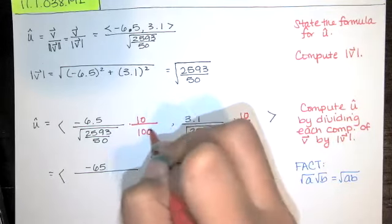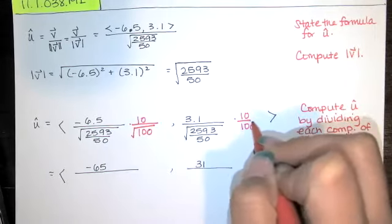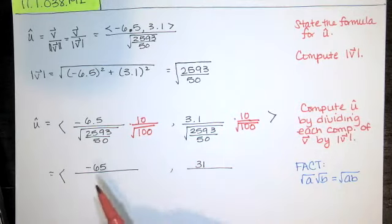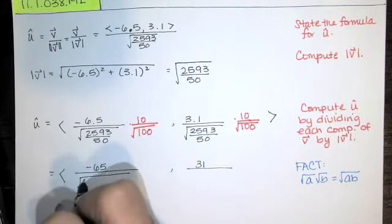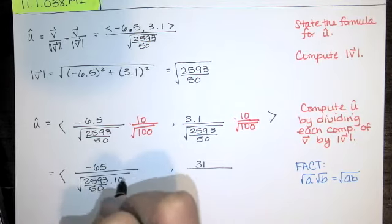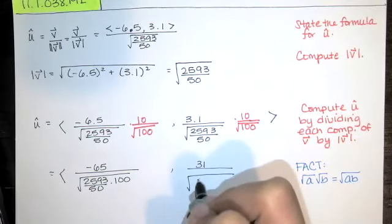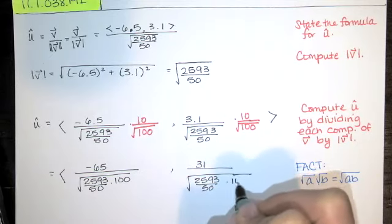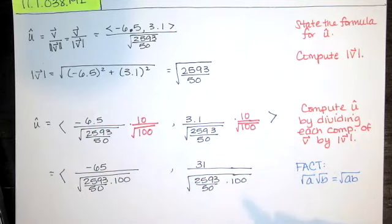A 10 we know is the square root of 100. So I'll just write it that way. And then I'll multiply these two guys together.